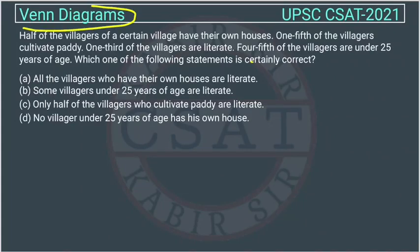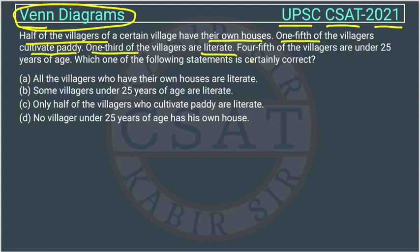This is a question of reasoning from Venn diagram asked by UPSC in their CSE paper of 2021. Half of the villagers of a certain village have their own house. One-fifth of the villagers cultivate paddy. One-third of the villagers are literate. Four-fifth of the villagers are under 25 years of age. Which one of the following statements is certainly correct?